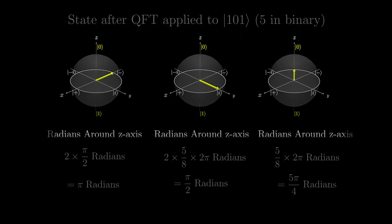This means that if we have this state, which is 5 in binary, and we apply the quantum Fourier transform, we get this state. In the next lesson, we will see a use of the quantum Fourier transform, but for now, let's look at the circuit.